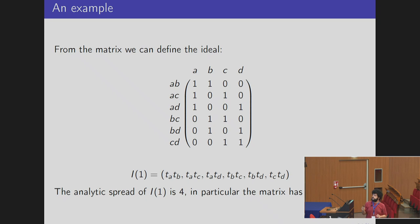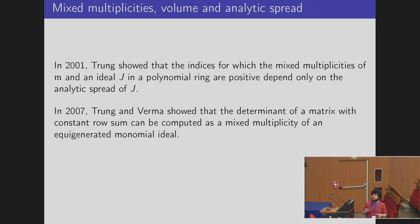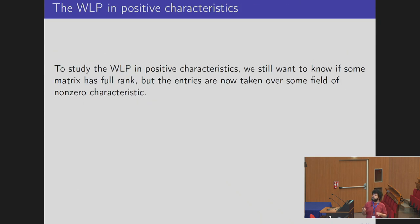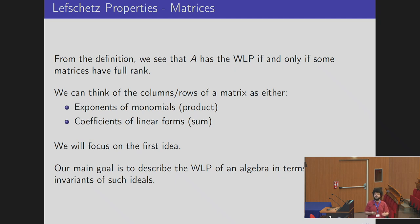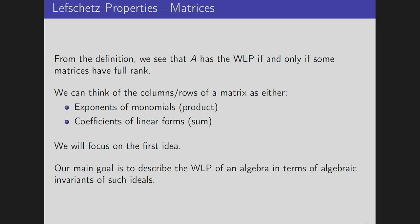There is also the other case: when you look at the columns of your matrix as coefficients of linear forms, you have a lot more structure because you have a product of linear forms. Using results by Jun Huh, who used the results by Trung and Verma to prove that the characteristic polynomial of a matroid or hyperplane arrangement is log-concave, essentially what you get is that the matrix is the representation of some matroid, and then you can exploit the combinatorics of matroids.